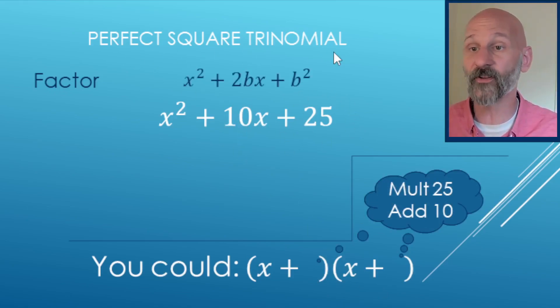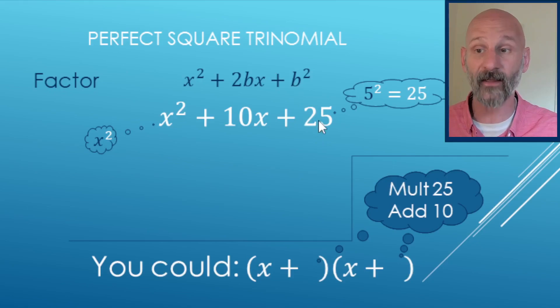But this one does follow the perfect square trinomial format, right? So we have an x squared out in front, and then we have another number squared out in back. In this case, 25 is 5 squared. So we have a square and a square.